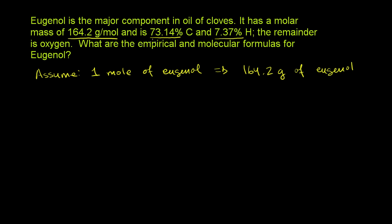They gave us the composition — what percentage is carbon, what's hydrogen, and the remainder is oxygen. Since we have one mole of eugenol with a mass of 164.2 grams, we can use the percentages to figure out the mass of carbon, hydrogen, and oxygen. So: 164.2 grams of eugenol times 73.14% will tell us the mass of carbon.